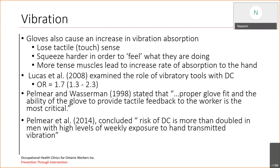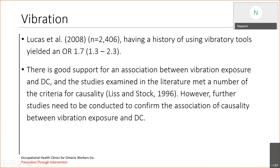Lucas in 2008 examined the role of vibratory tools with Dupuytren's Contracture and found an odds ratio of 1.7. Another study in 1998 also stated that proper glove fit and the ability of the glove to provide tactile feedback to the worker is the most critical factor. One study in 2014 concluded that the risk of Dupuytren's is more than doubled in men with high levels of weekly exposure to hand-transmitted vibration. So glove fit as part of vibratory tool use is important because it has a direct effect on vibration absorption.